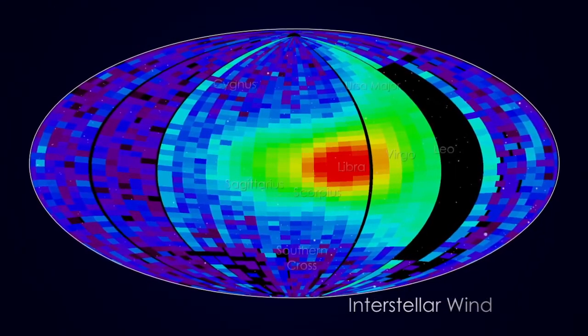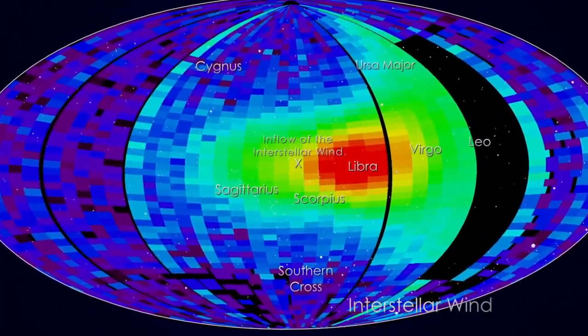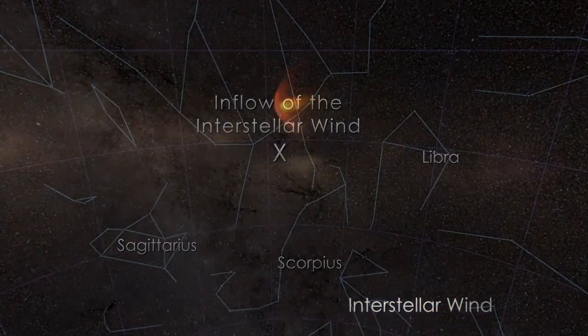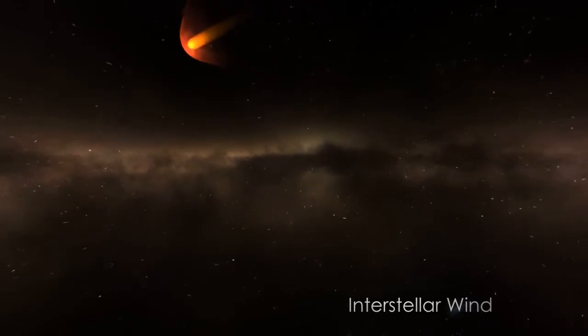Recent measurements of the interstellar wind by IBEX have shown that its direction is changed by about seven degrees in only the last 40 years. While the cause of this shift is unknown, it may be telling us something about the changing conditions as we move through the Milky Way.